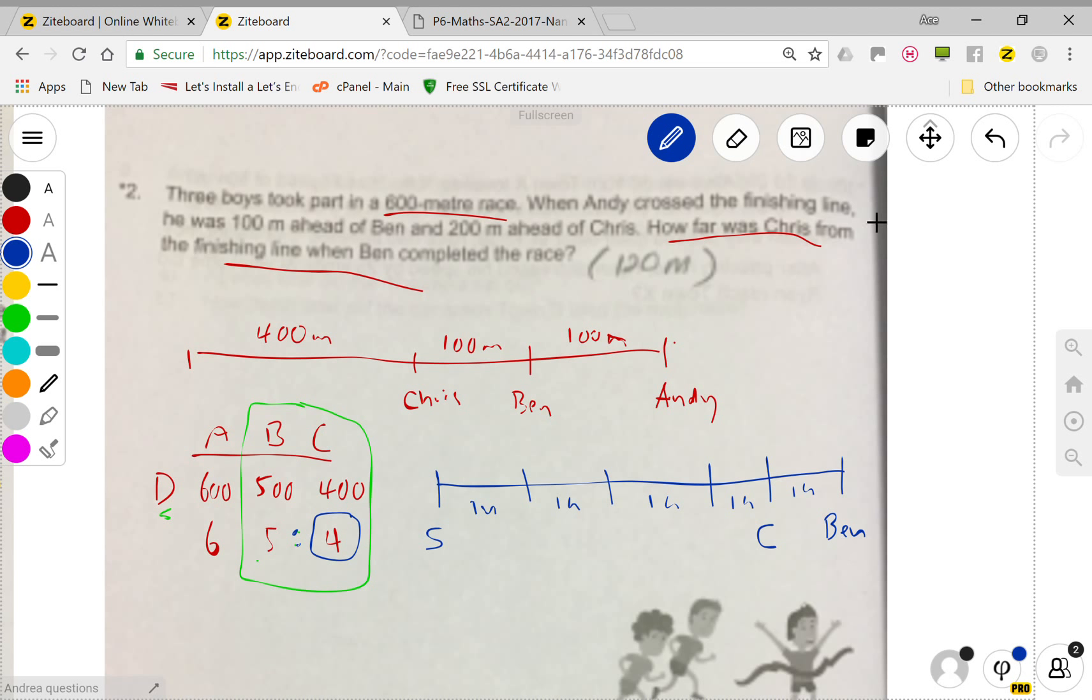C completed 4, so now the question is how far was Chris from the finishing line when Ben completed the race. This whole race is 600 meters.